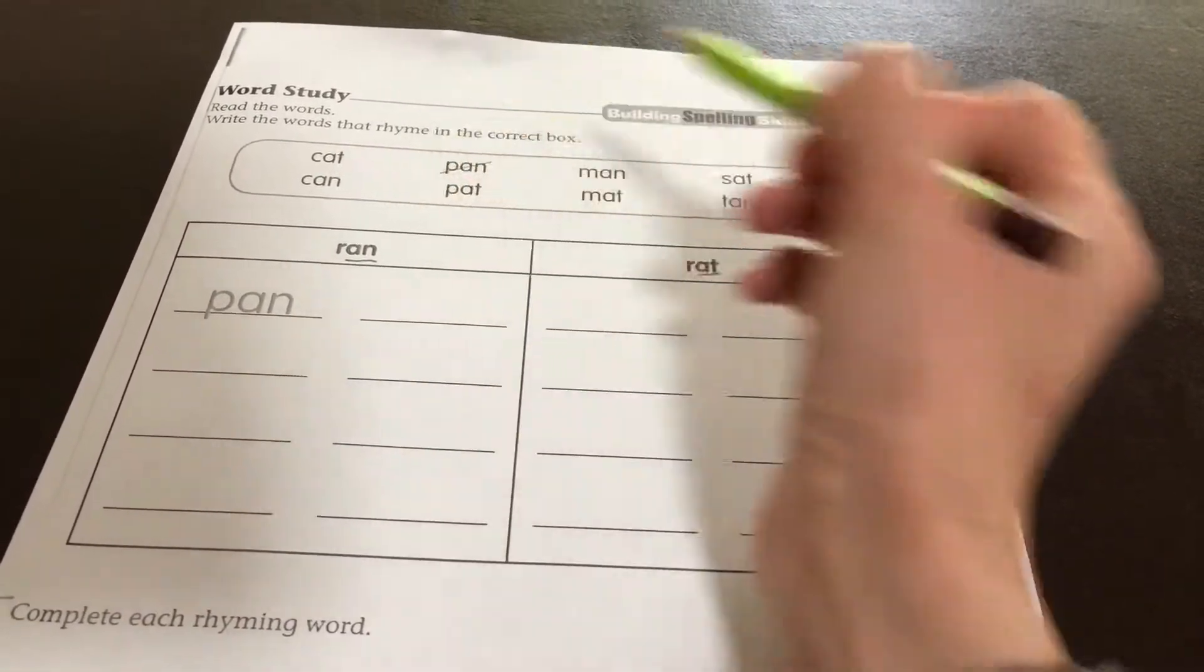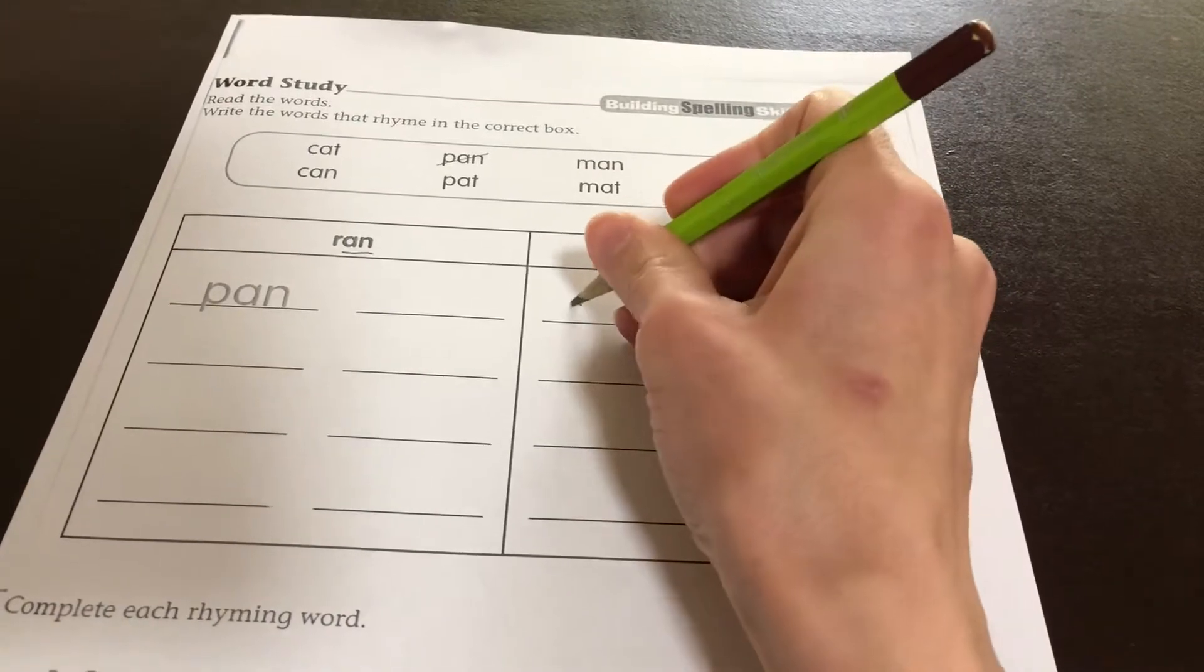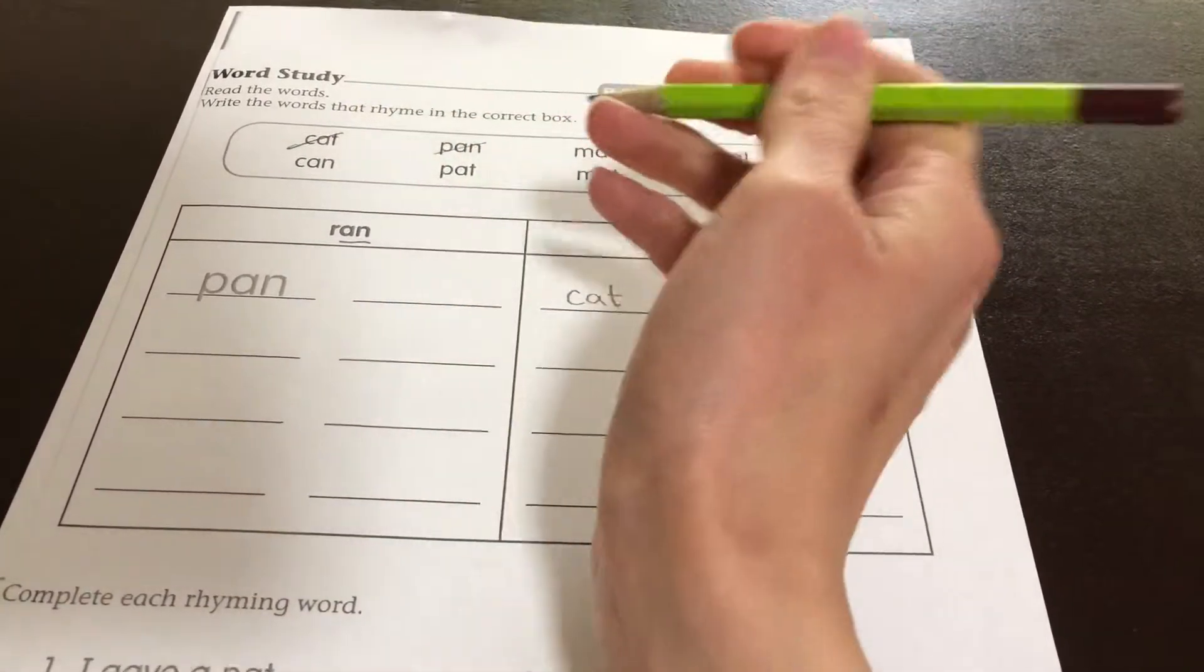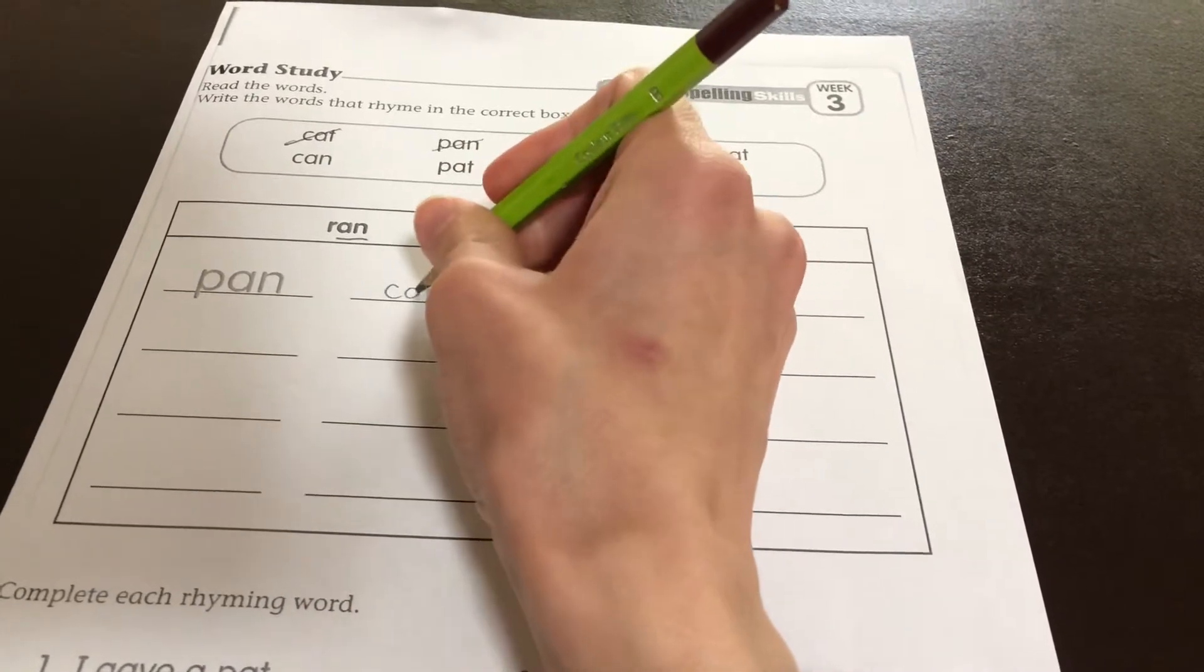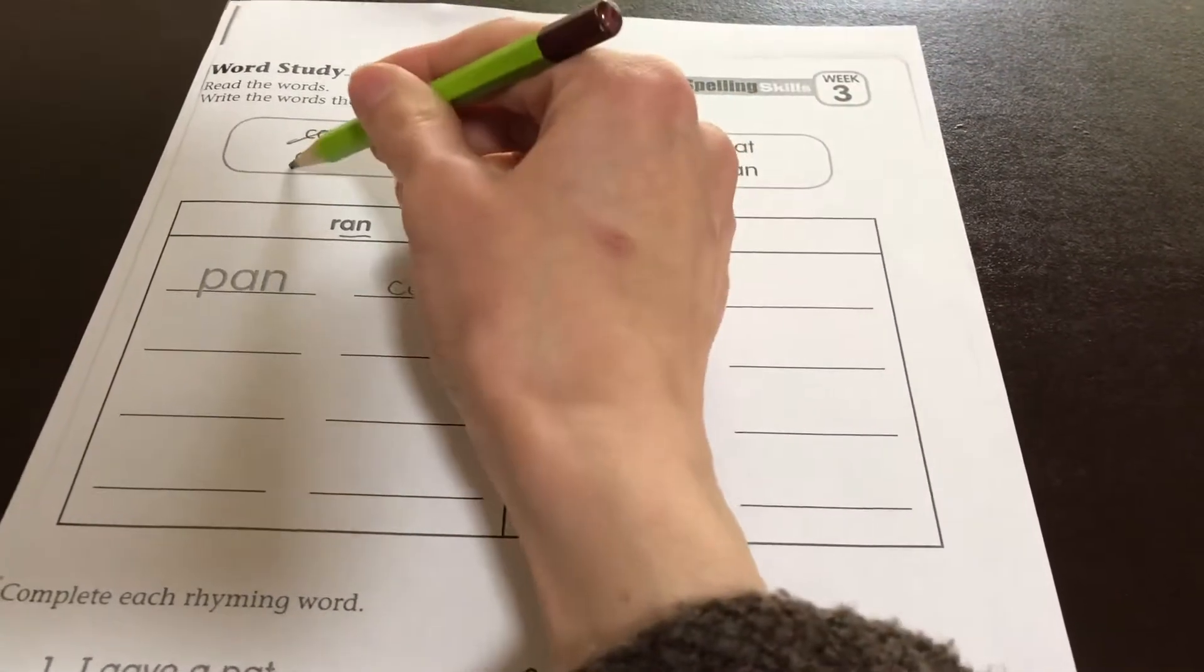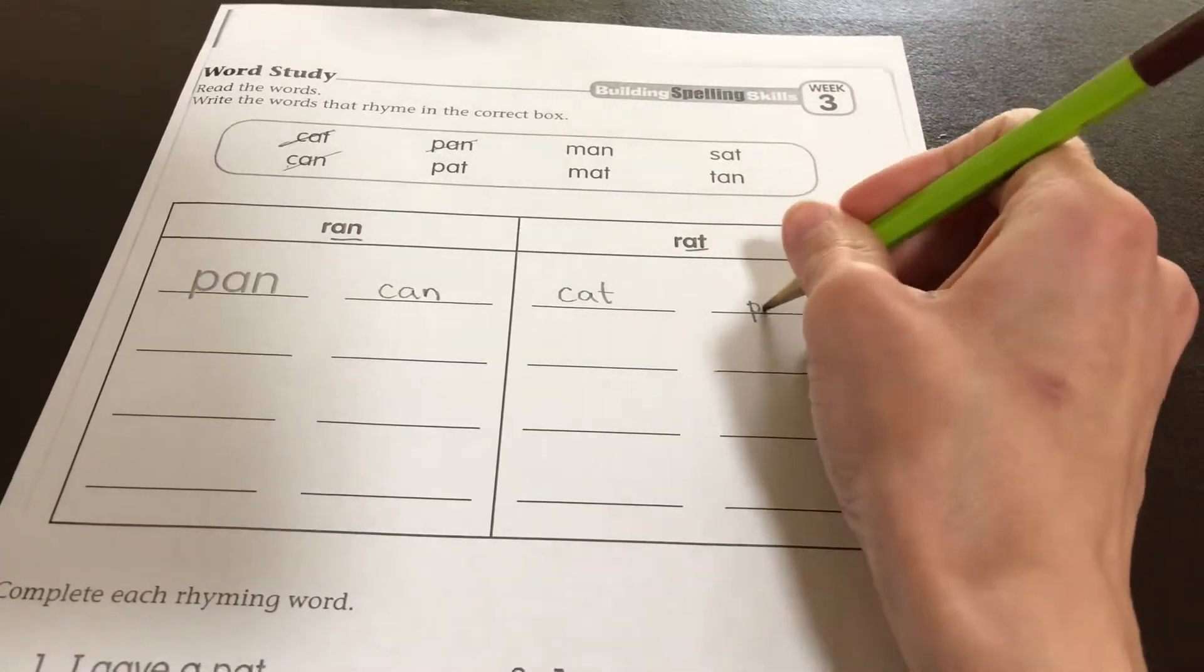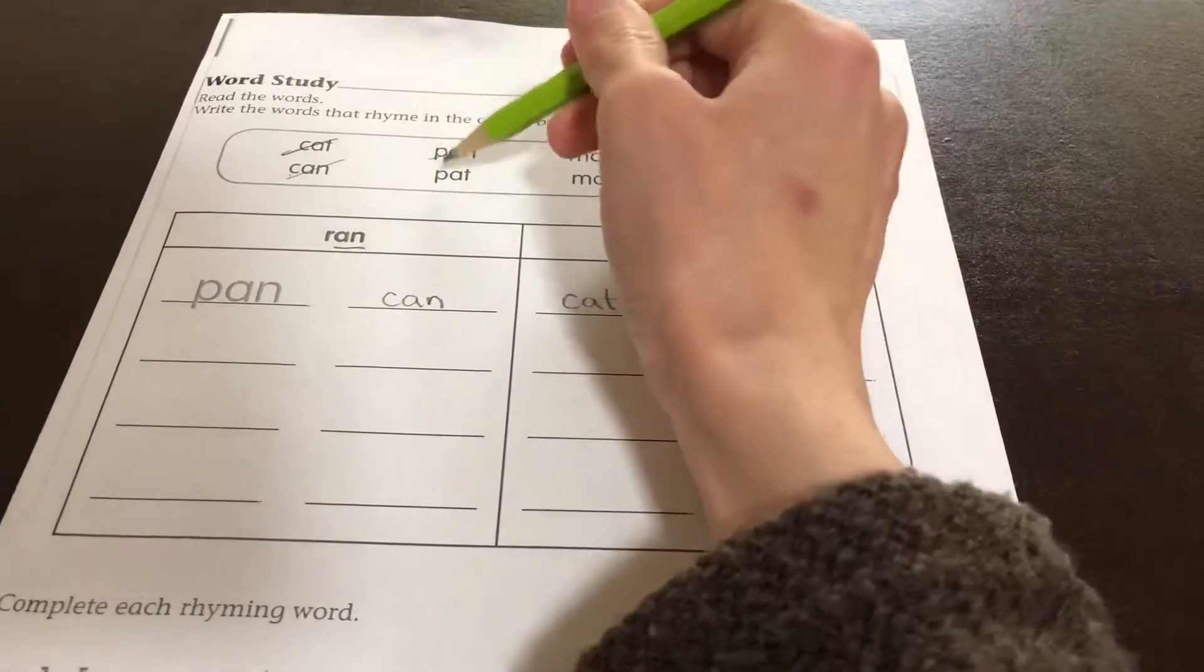So the first one is done, pan. Alright, so we have cat. Cat rhymes with rat. Can. Can rhymes with ran and pan. And we have pat. Pat rhymes with cat and rat.